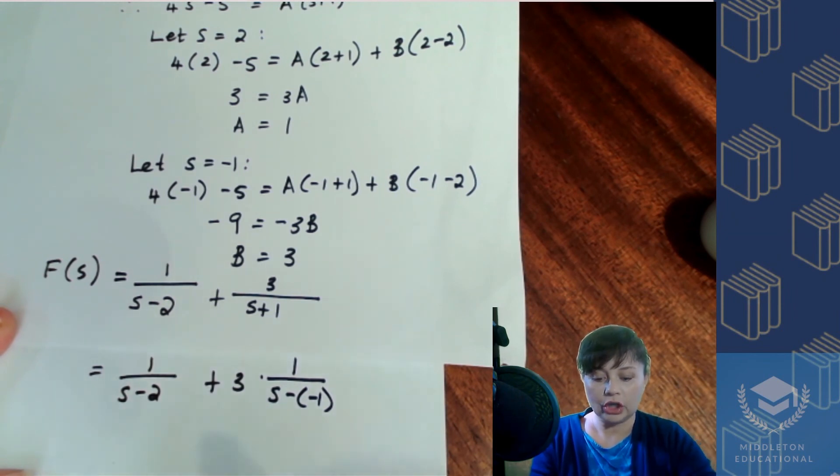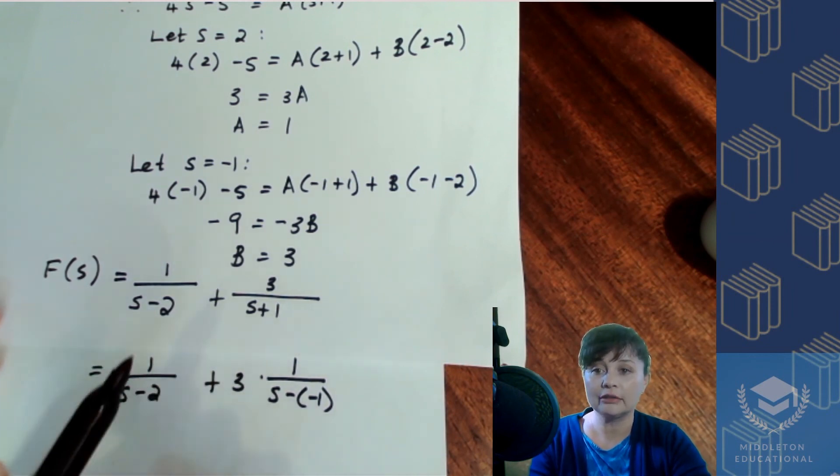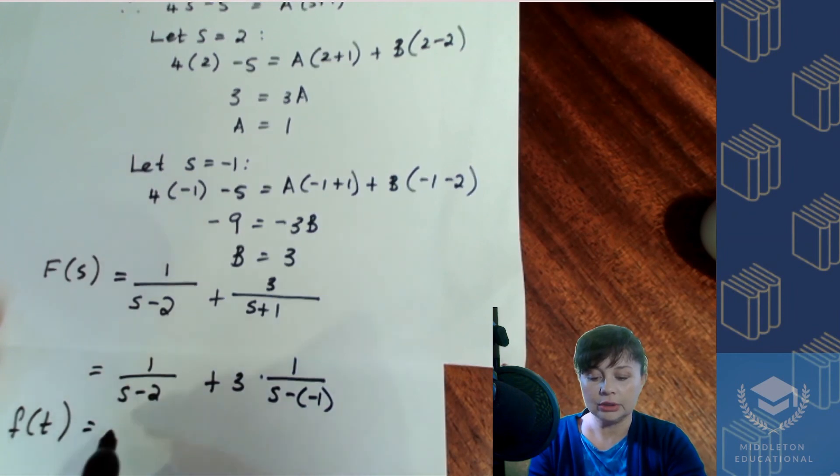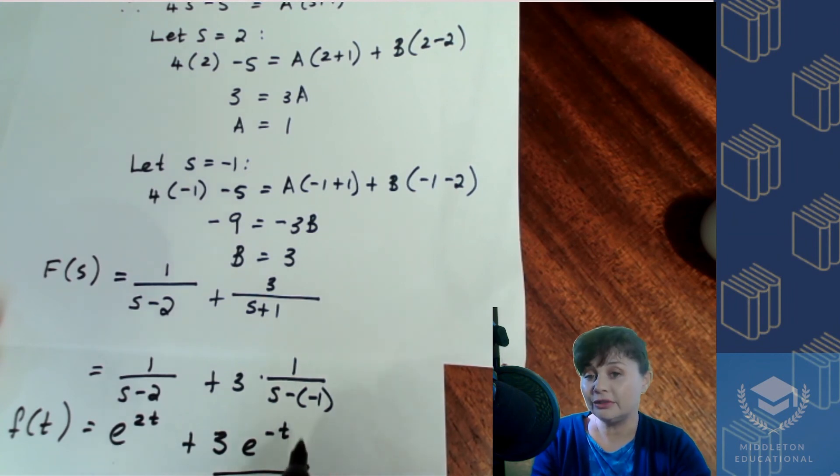So now we've got our function in the same form as what is on the table, which means we can now find what f of t is. So f of t is going to be e to the 2t plus 3e to the minus t. And that over there is our inverse Laplace transform, which is what we were looking for.